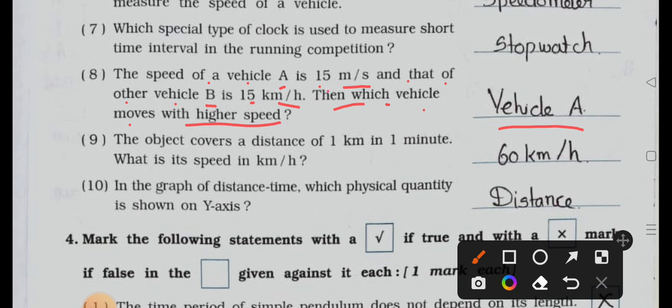Number nine: the object covers the distance of one kilometer in one minute. What is its speed in kilometer per hour? Answer is 60 kilometer per hour.